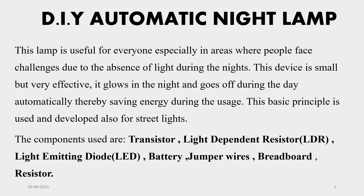This lamp is useful for everyone, especially in areas where people face challenges due to the absence of light during night. This device is very small but effective — it glows at night and goes off during the day automatically, thereby saving energy. This basic principle is also used and developed for street lights. Yes, this is the basic principle used in automatic street lights, and even in solar street lights you can incorporate this, maybe with bigger components.